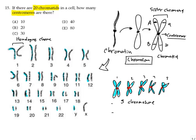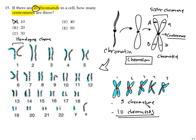So: five chromosomes have 10 chromatids. Going back to the question — if there are 20 chromatids in the cell, how many centromeres are there? The answer is half of 20, which is 10. Because 20 chromatids means 10 chromosomes, and since one centromere is dedicated to one chromosome, the answer is 10 centromeres.